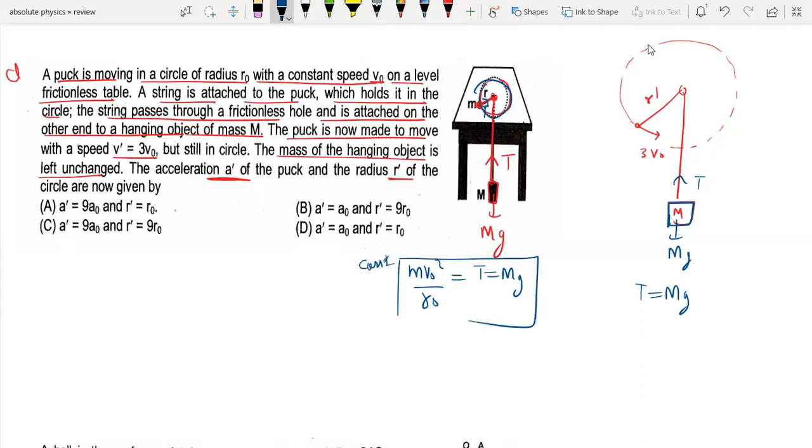For case 2, the tension is equal to mv1² divided by r1. So you can put mv0² divided by r0 equal to m times 9v0² divided by r1.